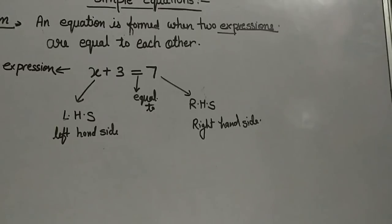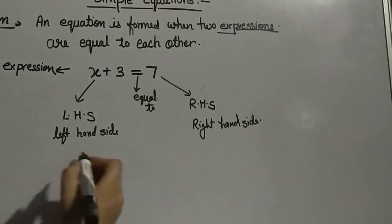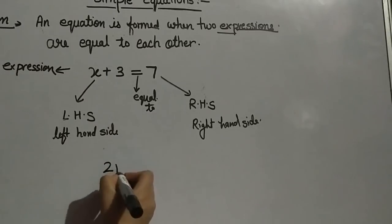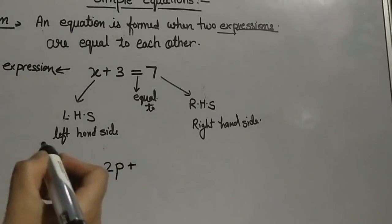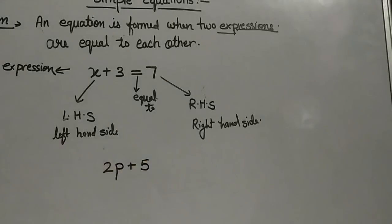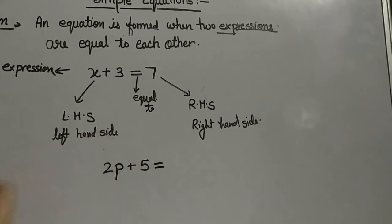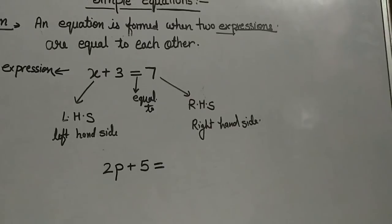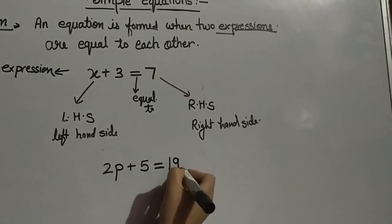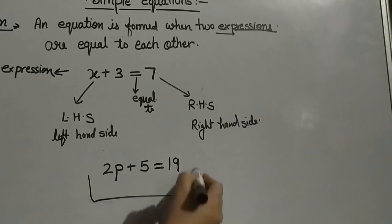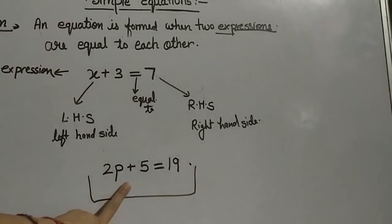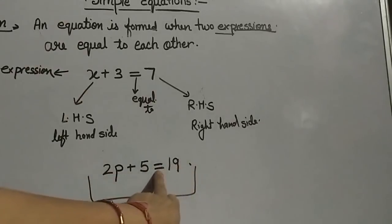Let us see one more example for equation. I am writing here 2P plus 5. Is it an equation? No, it is just an expression. Now, as I am putting the equal to sign and giving the right hand side, it will convert into an equation. Suppose I have written 90. So, 2P plus 5 equal to 90 is called an equation. This is the left hand side, this is the right hand side, and this is the equal to sign.